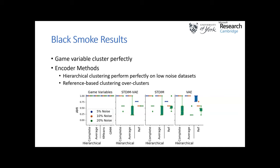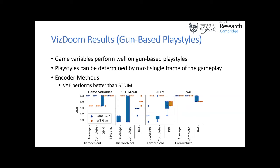Using both proposed methods we were able to translate gameplay into a representation space and cluster on it. In the Black Smoke environment, game variables could capture the playstyles regardless of noise level, giving a perfect AMI score of 1. Comparing different encoding setups including the hybrid and its separate elements, on low-noise datasets both encoding methods performed reasonably well, but increasing noise reduced performance quality.